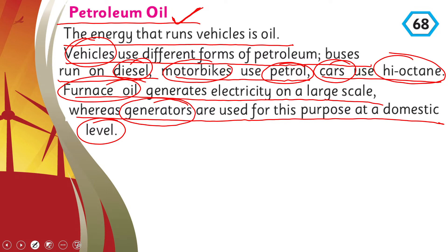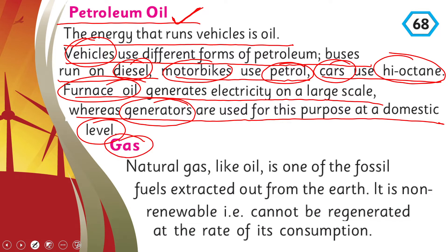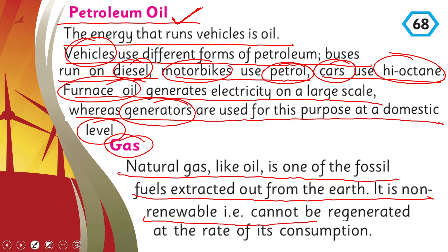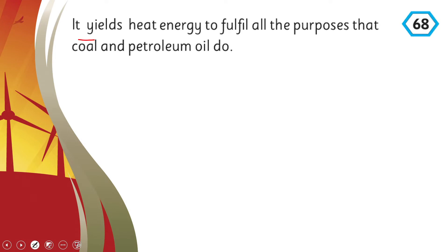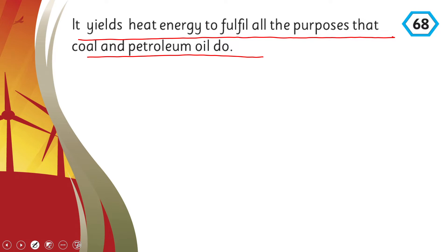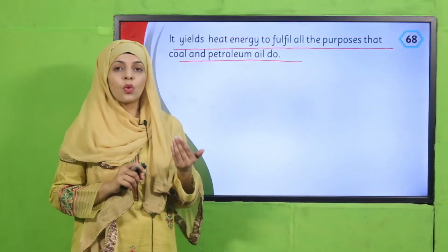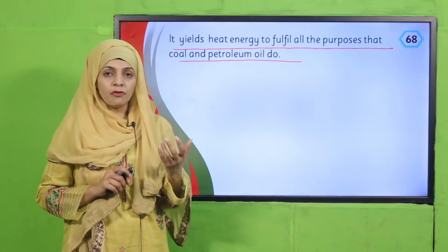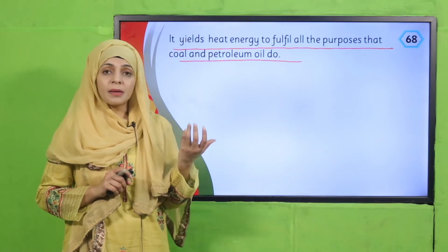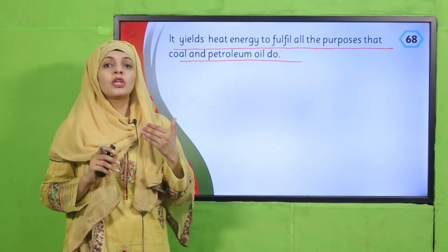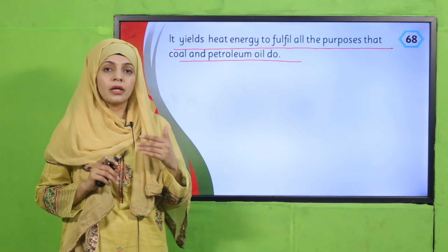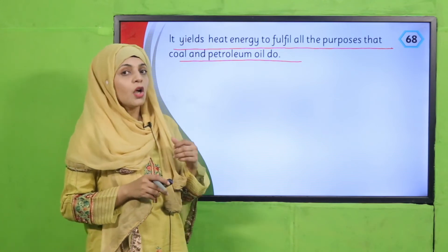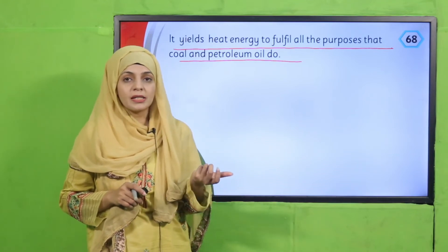Natural gas, like oil, is one of the fossil fuels. It is extracted from the earth and is non-renewable — it cannot be generated at the rate of its consumption. It yields heat energy to fulfill all the purposes that coal and petroleum oil do. Gas is used for cooking, for heating in geysers and heaters. Since it cannot be renewed once used, we should conserve it.